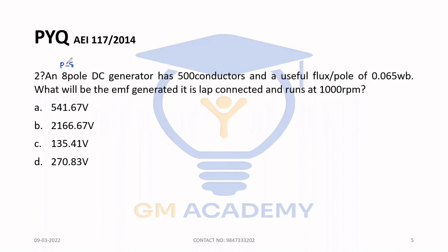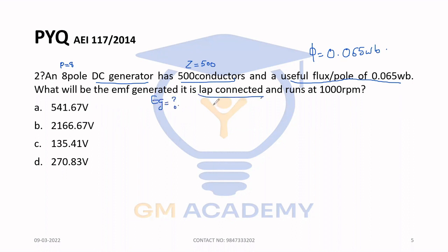P is equal to 8. Number of conductors Z is equal to 500. Useful flux per pole, phi, is 0.065 Wb. We need to find EG. For lap connected, A is equal to P, which is equal to 8. Speed N is equal to 1000 RPM. We use the EMF equation: EG = (P × phi × Z × N) / (60 × A).